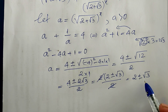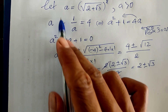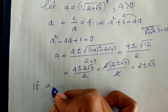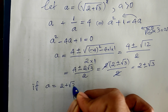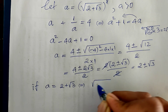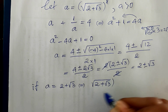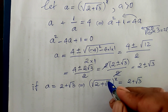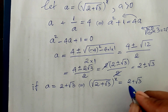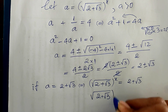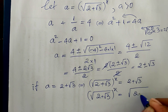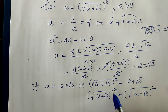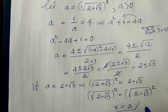We have A equal to square root of 2 plus square root of 3, all to the power H. If A equals 2 plus square root of 3, then square root of 2 plus square root of 3 to the power H equals 2 plus square root of 3, which means H equals 2. So the exponent H is equal to 2, giving us our solution.